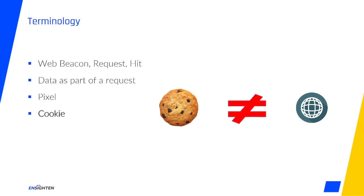I want to cover a common misunderstanding with cookies that becomes relevant to both the tagging and privacy worlds. Cookies are only a data storage medium. They do not send or receive data on their own. The fact that a cookie exists with data does not mean that the data has been sent somewhere. Sending and receiving is for requests. Cookies and their data just happen to be one of the things that can be sent.